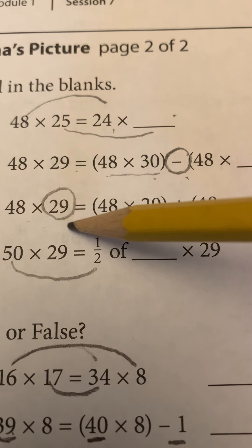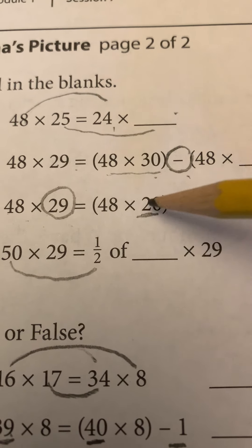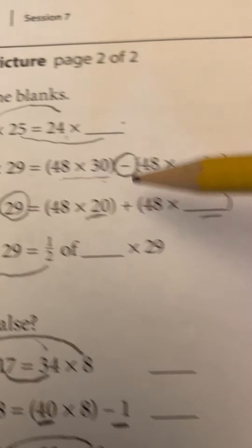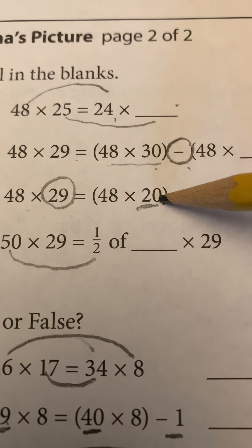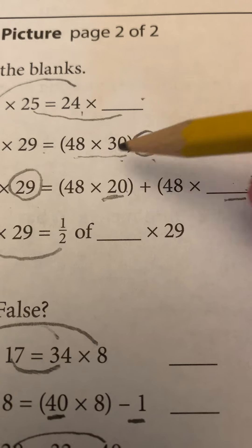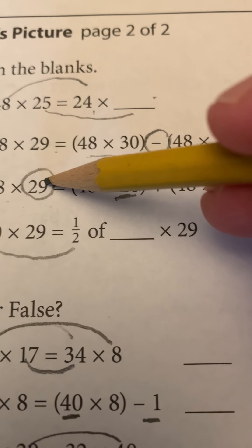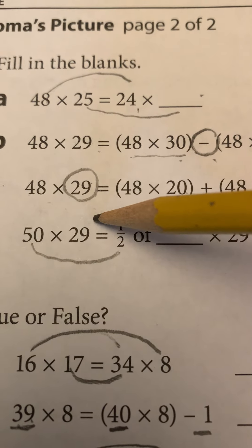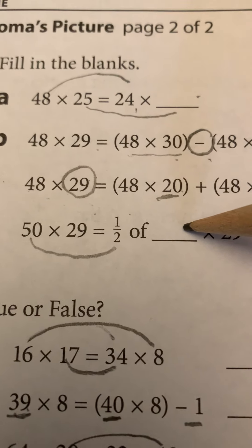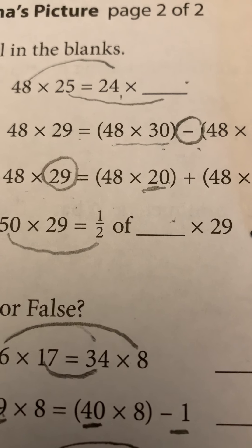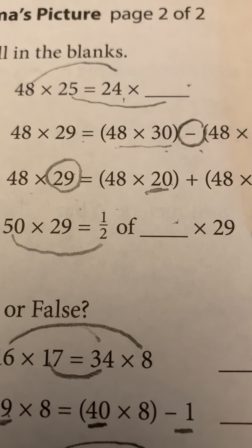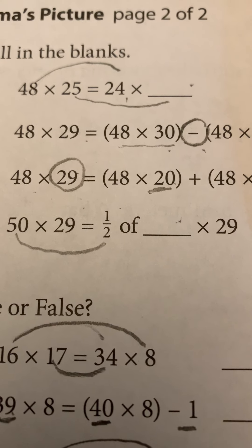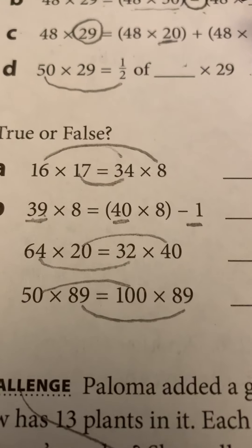48 times 29 is 20 sets of the 48 plus how many sets? So to get to 29, I've got 20 sets plus how many sets? 20 plus what is my 29 sets? 50 times 29 equals half of what times 29? Think about it.